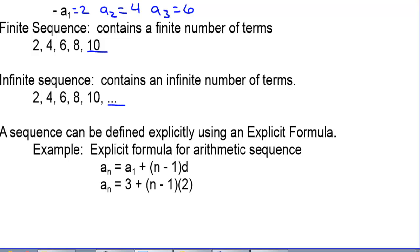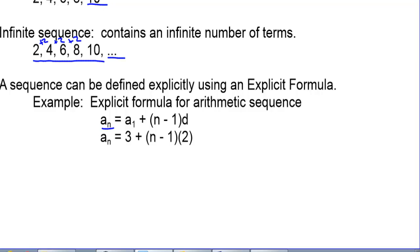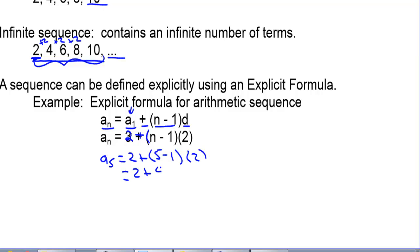A sequence can be defined explicitly using an explicit formula. An example: an explicit formula for an arithmetic sequence. This is arithmetic because to get the next term, we are adding 2. So an explicit formula is a sub n = a sub 1 + (n − 1) times the common difference, where the common difference is 2. For the fifth term: 2 + (5 − 1) × 2 = 2 + 8 = 10. The fifth term is 10.